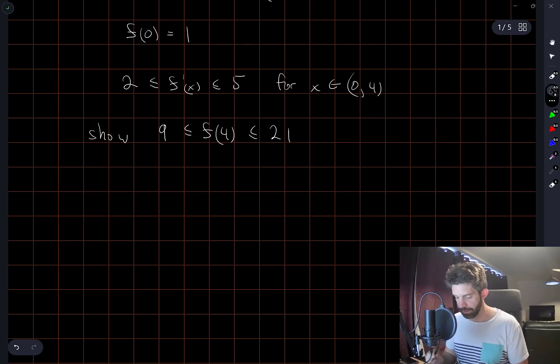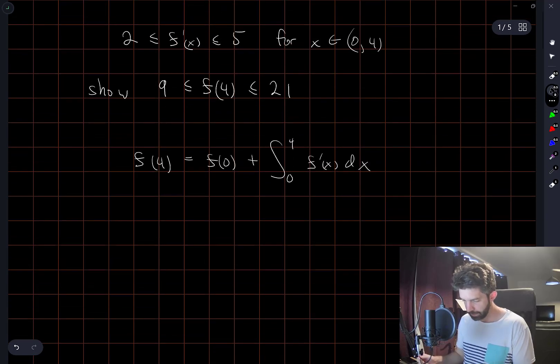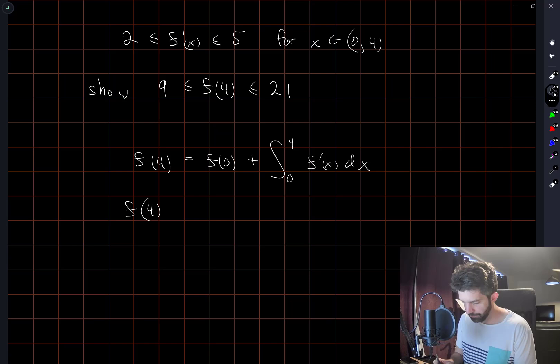Another way of showing this is by writing that f(4) equals f(0) plus the integral from 0 to 4 of f'(x) dx. So f(4) = 1 + ∫₀⁴ f'(x) dx.